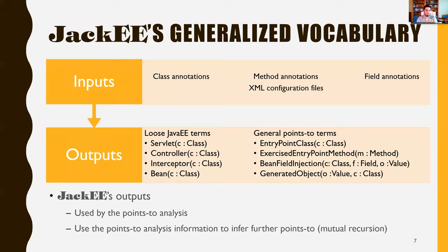This vocabulary contains general common Java enterprise terms like servlet, controller, interceptor, or bin. It also contains variations of these terms, like entry points or bin field injections, which encode valuable points-to analysis concepts. We provide this vocabulary, and you can use it to model the behavior of frameworks.